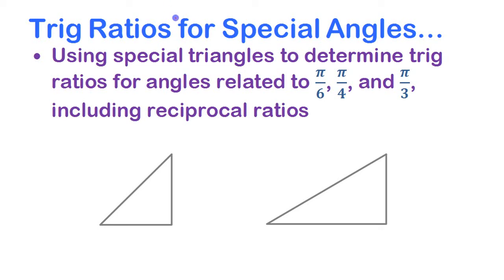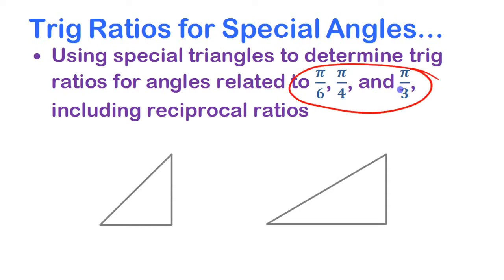We're going to look at determining trig ratios for special angles. By special angles, I mean angles related to 30 degrees, 45 degrees, or 60 degrees — or in other words, π/6, π/4, and π/3.